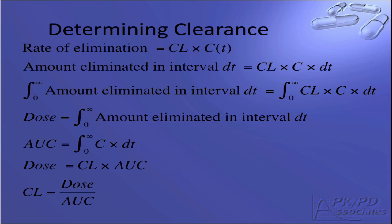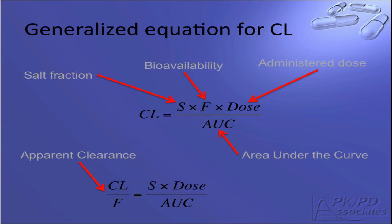Both of these can be calculated from the concentration time data collected from a PK study. The previous equation was based on an intravenous dose of drug. This is the generalized equation that can be used for any route of administration. There are two added factors: one for the salt fraction, S, and one for the bioavailability. Salt fraction is used when the dose amount refers to the drug in salt form. Bioavailability is the absolute bioavailability for the specific route of administration used. In cases where the bioavailability is not known, you can move the term to the left side of the equation to give the apparent clearance — the clearance unadjusted for bioavailability.